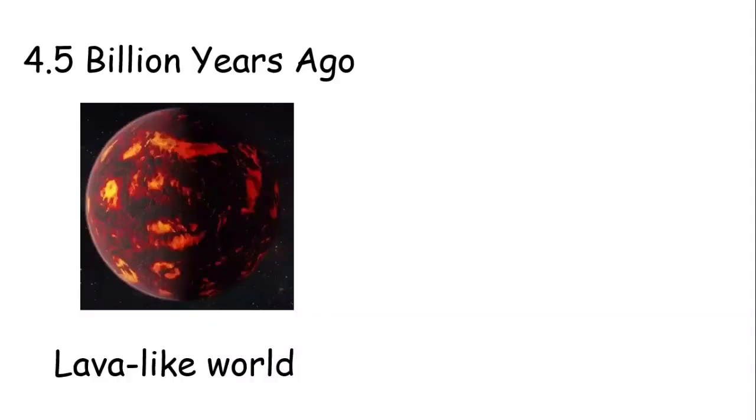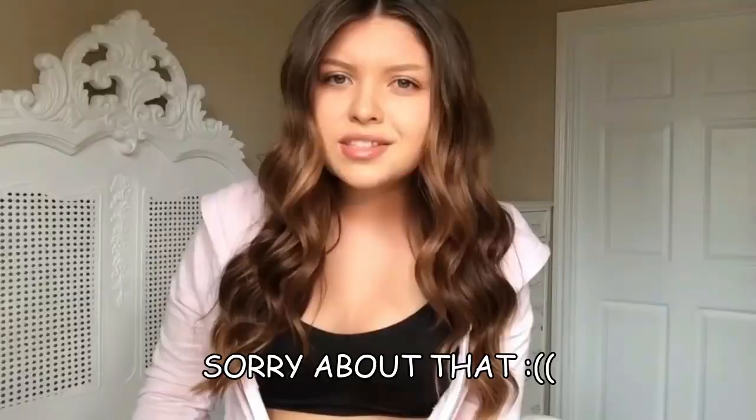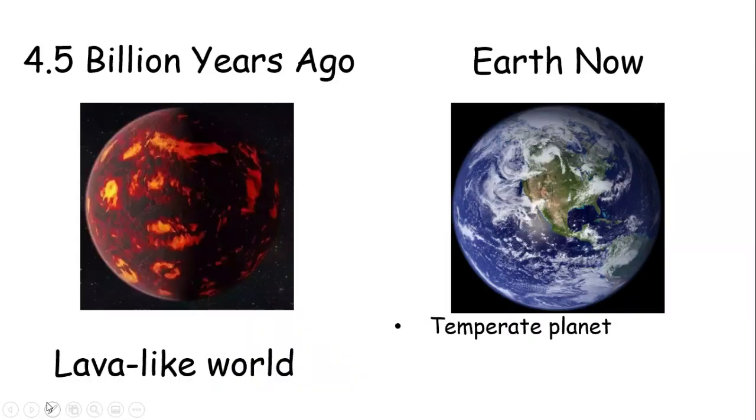In this video, we're going to talk about the characteristics that make Earth habitable. 4.5 billion years ago, Earth used to be a very violent planet, almost like a lava world. Now, it is a temperate planet with 75% of its surface covered by water and hospitable to life.